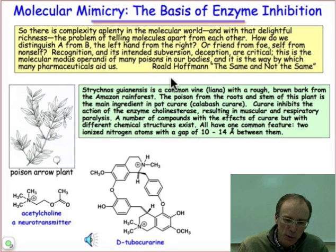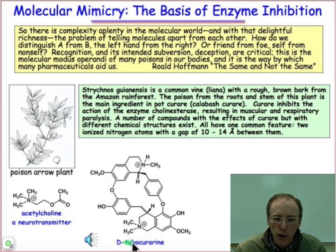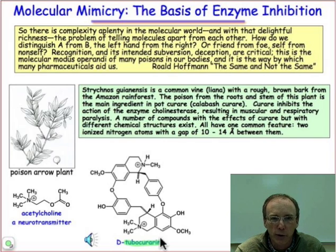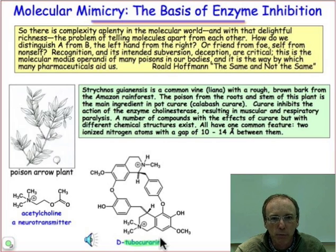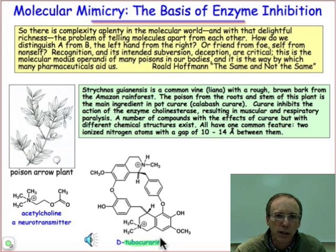Hoffmann uses in his book, as an example, the molecule tubocurarine as an inhibitor. Tubocurarine comes from the liana vine. It's the poisoned dart material that basically blocks acetylcholinesterase, and so it prevents nerve propagation from taking place. It is an inducer of paralysis — it's even been used in lethal injections.